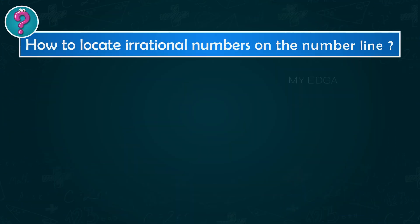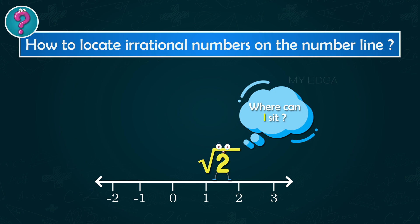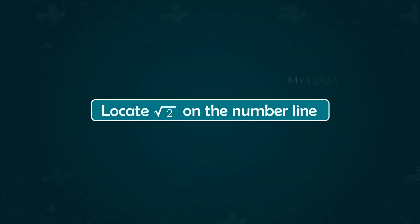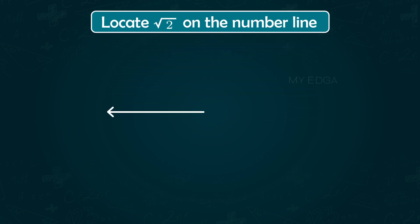Today in this video let us see how we can locate some irrational numbers on the number line. To begin, let us locate √2 on the number line. For this, consider a number line and locate a point one unit away from O and name it as P.